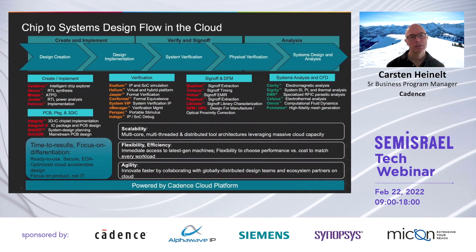On this slide, you see the whole chip-to-systems design flow in the cloud that is today supported, but also our analog tools are supported here. So you can do design creation, design implementation, system verification, physical verification, and system design and analysis in the cloud with all these tools that have been enhanced for multi-core and multi-threaded running and have distributed tool architecture, which leverage the massive cloud capacity that you find at AWS or Microsoft Azure.